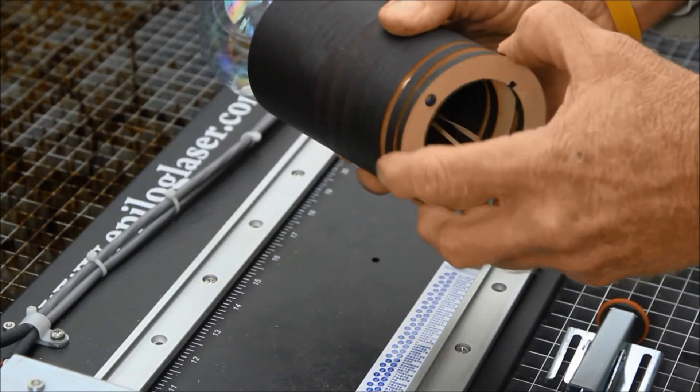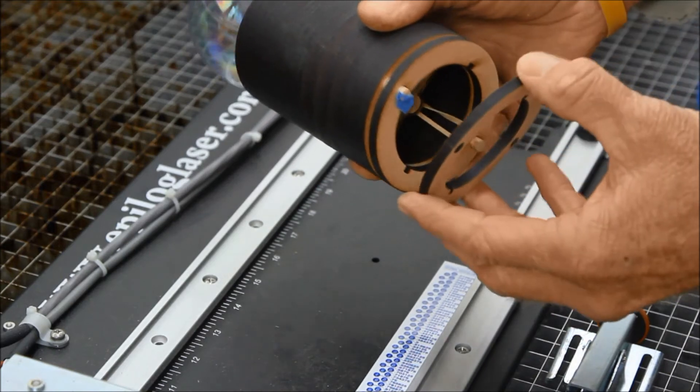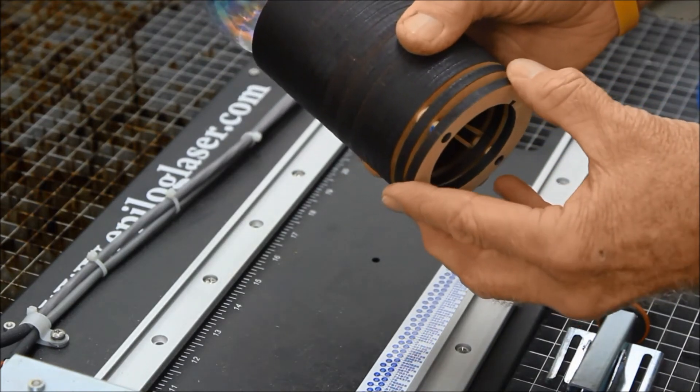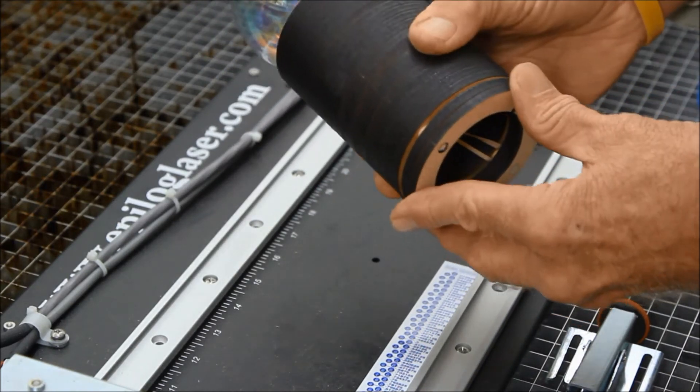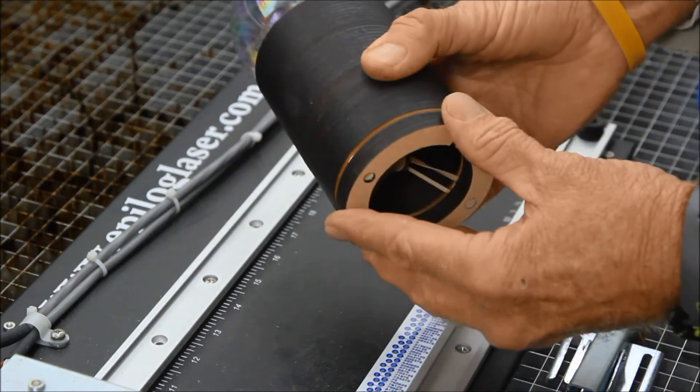And as you can see, this one with the blue tape on it is kind of holding a little tighter. And then you just put it back together, put on your rotary device, and engrave.